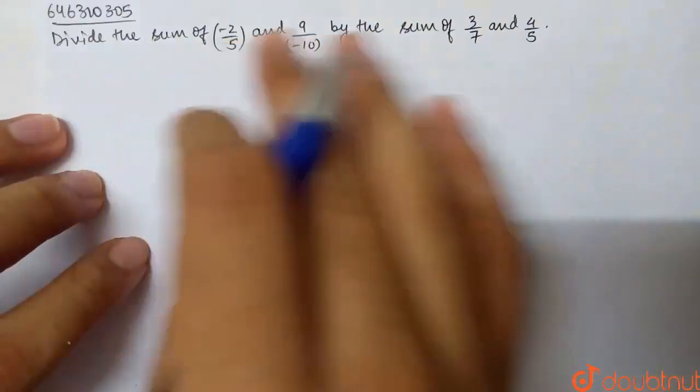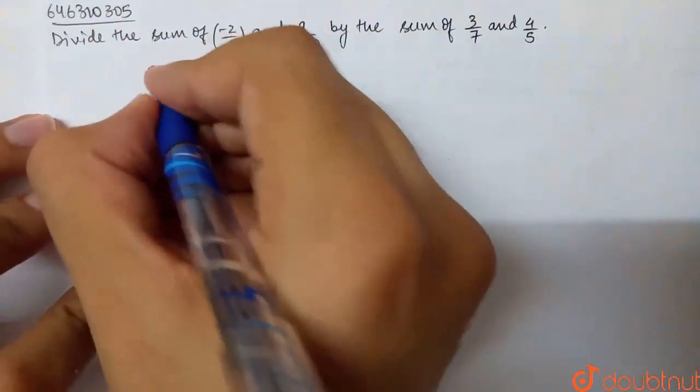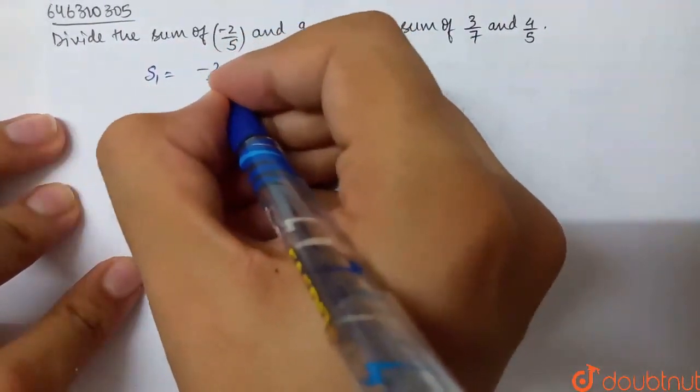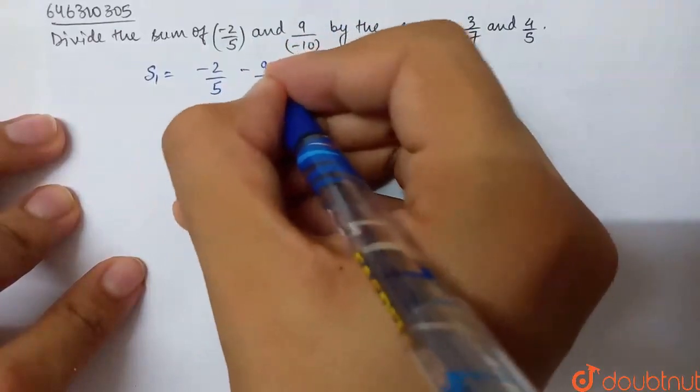Next question is: divide the sum of this by the sum of this. We will take sum 1, that is minus 2/5, and this minus is above the bottom, minus 9/10.